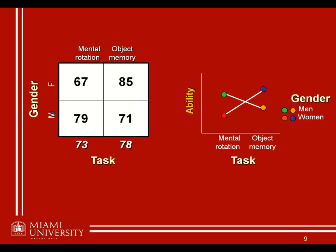These are called the marginal means for just the two different tasks regardless of gender. Similarly, we can look at scores for males and females collapsed across tasks — how well did the males do overall regardless of whether they did mental rotation or object memory. With 20 males and 20 females total, averaging 79 and 71 gives a male average of 75, and averaging 67 and 85 gives a female overall average of 76.